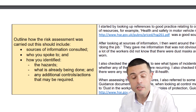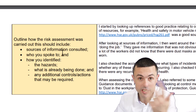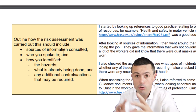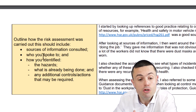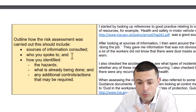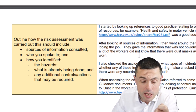Back to the bullet points. We have now covered sources of information — internal and external — the guidance, the people, the accident records, and the health records. We've also talked about who you spoke to, which is the second bullet point: we spoke to the people doing the job. So anyone you speak to, mention that.